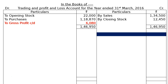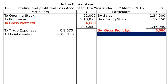The Gross Profit brought down of rupees 6,080 is taken to the credit side of the Profit and Loss Account as the opening figure. Next, we record expenses. To Trade Expenses: add outstanding trade expenses of rupees 150 as given in the adjustment. This outstanding amount is also written under Current Liabilities in the Balance Sheet.